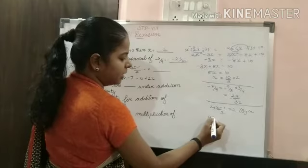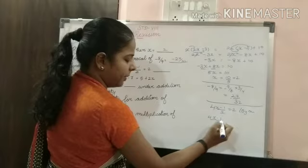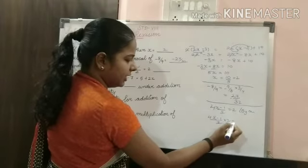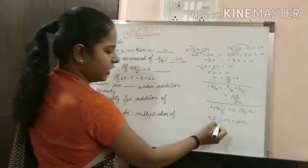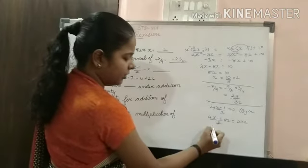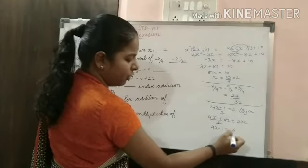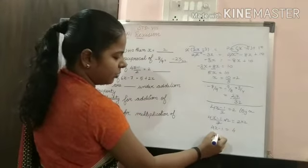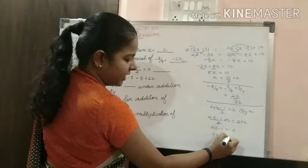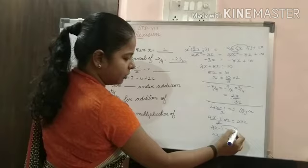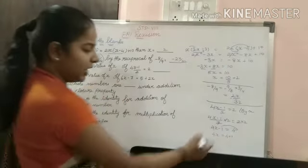After multiplying both sides by 2, the 2 in the denominator cancels, and we get 4x minus 1 is equal to 4, since 2 times 2 is 4. Now transposing minus 1 to the other side: minus 1 becomes plus 1. So 4x is equal to 4 plus 1.